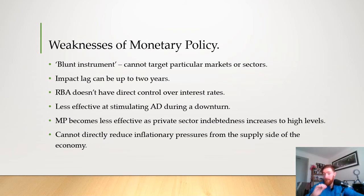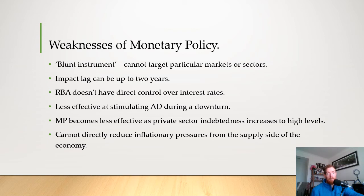The RBA doesn't have direct control over interest rates. Although they set the cash rate and try to influence banks, they don't actually have the power to tell banks to lower their interest rates. Banks are private businesses that want profit, and they've quite a few times ignored the RBA, which has caused monetary policy to be less effective than it could be. It's also less effective at stimulating aggregate demand during a downturn — even with rates at the lowest they've ever been, we are in a pandemic and people do not want to spend because they're afraid they won't be able to pay it back. It's not totally effective when consumer confidence and business confidence are low, and it also becomes less effective as private sector indebtedness increases — people are afraid to borrow more.